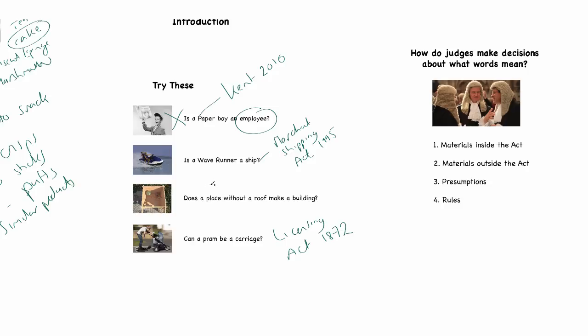The Waverunner is very complex. There are a number of cases. You have Steedman versus Schofield, 1992, and then you have R versus Goodwin, 2005. Essentially, at the moment, the courts have said that it is not a vessel that is used for navigation, which is the definition of a ship. But because there is a problem, this is having to go back to Parliament for Parliament to make a decision on whether to include, through a statutory instrument, a Waverunner as a ship. But at the moment, I think the position is still that it is not. But it's hugely complex.